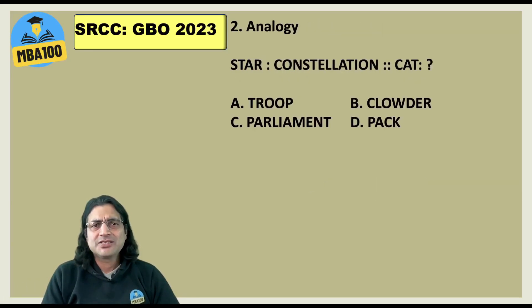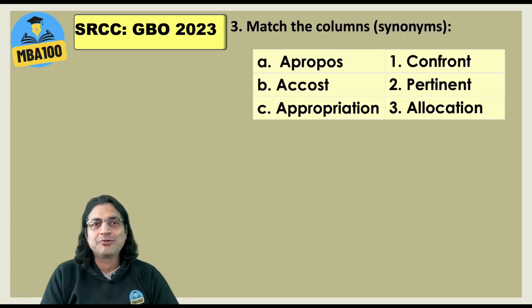What about this one? A group of star is constellation. A group of cats is? Clowder. Pack is a group of dogs or wolves. Troop is a group of? Tell me and tell me fast. Troop is a group of monkeys or kangaroos. Parliament is a group of? Very interesting. Parliament is a group of politicians. No. It is a group of owls. Here your answer is clowder.